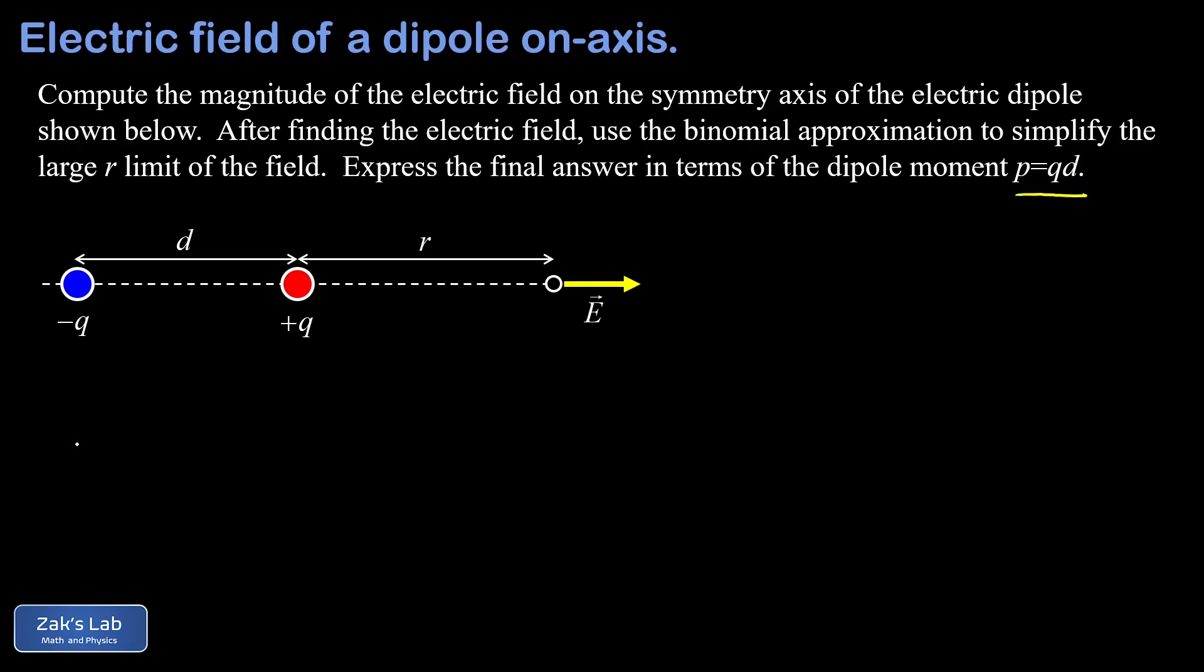So to get started, we just use the formula for the electric field of the point charge, and we add together the contributions from each of our charges. So the contribution from our positive charge is going to be q over four pi epsilon zero r squared, and we're giving that a plus sign because it points to the right here. The contribution from the negative charge is going to point to the left, so we'll put a minus sign out in front, and we have a q over four pi epsilon zero, but this time the distance to the observation point is r plus d, so we're going to square that in the denominator.